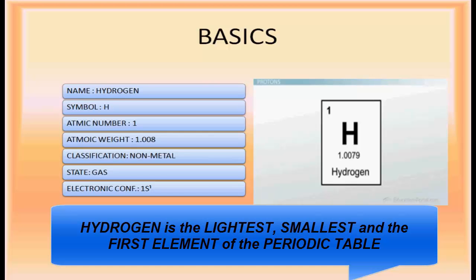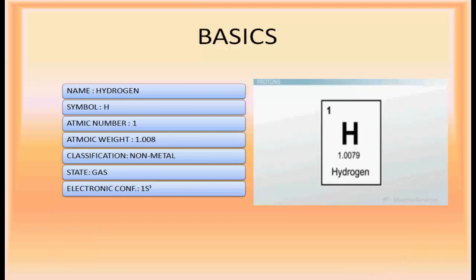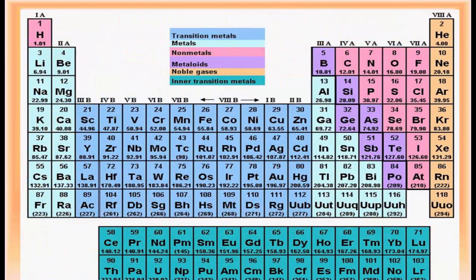Hydrogen is the lightest, smallest, and first element of the periodic table. Its electronic configuration is 1s1, which is the simplest of all elements. Hydrogen has been placed at the top of Group 1, above the alkali metals, because its electronic configuration is similar to those of alkali metals. In the modern periodic table, hydrogen is kept at the extreme left of the first group.